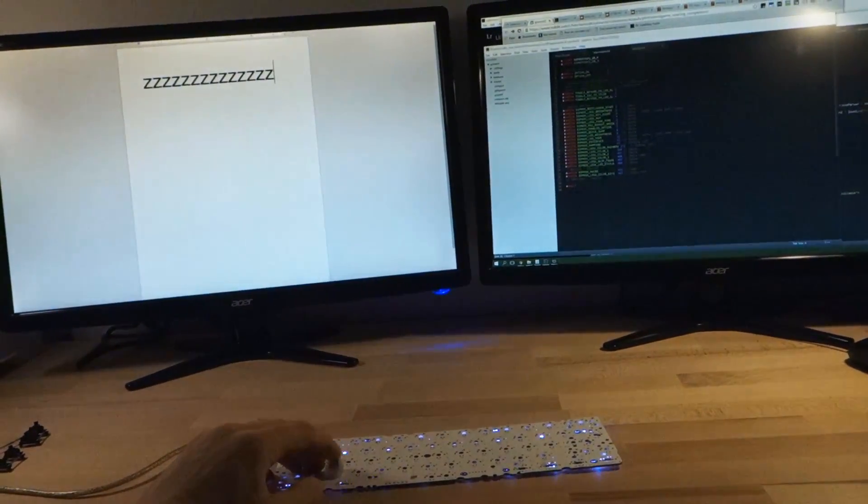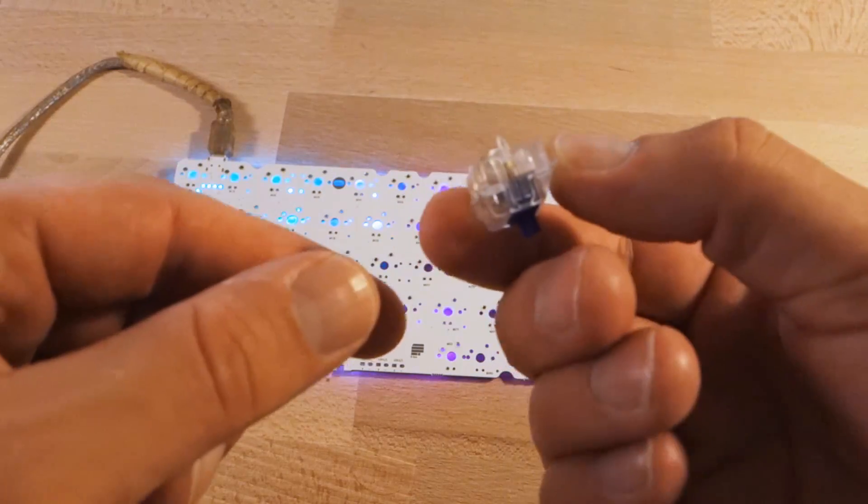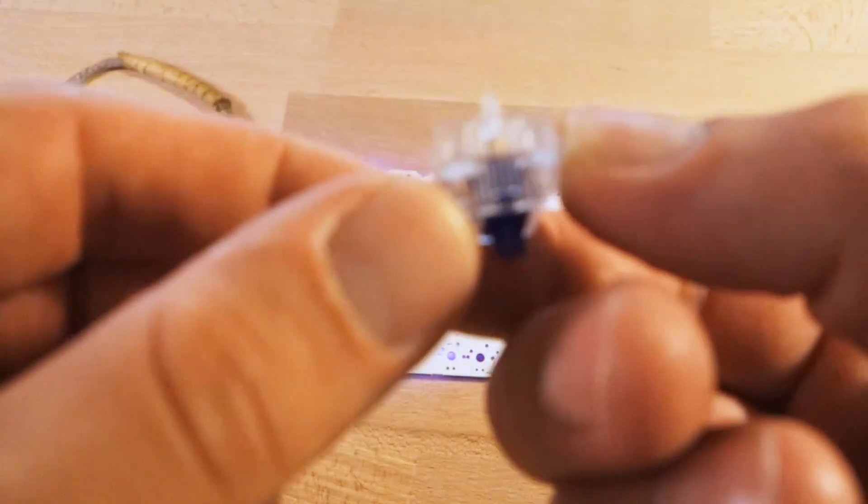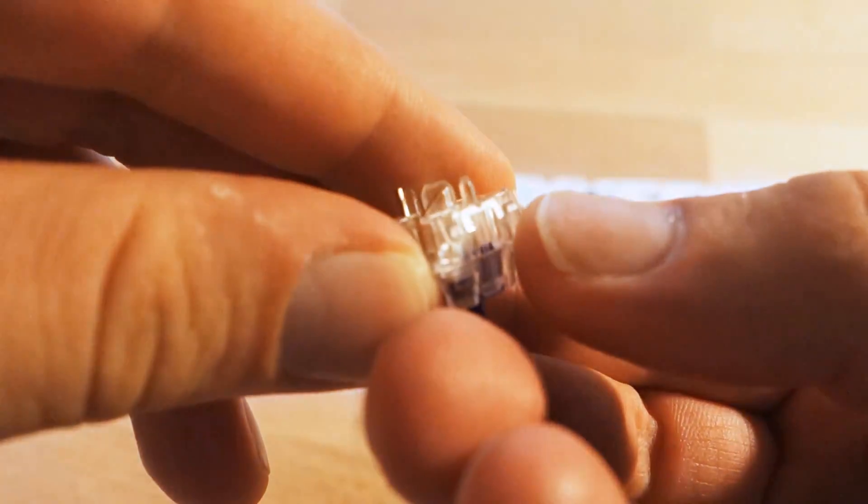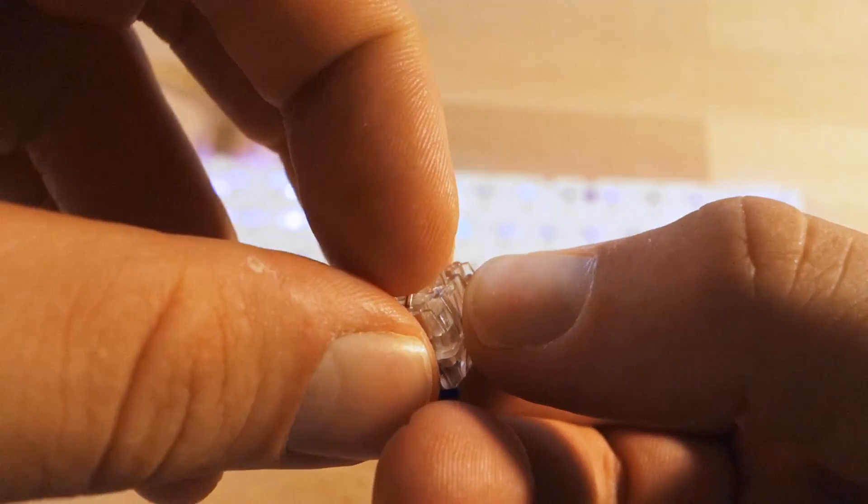As a side note, if a switch doesn't work that might not necessarily be due to the socket you installed, but maybe just due to a bent pin on the switch itself. So all you have to do is just check on the switches and bend it back with your finger and you're good to go.